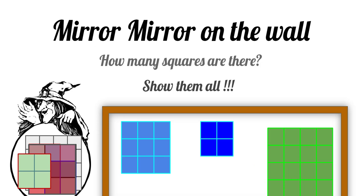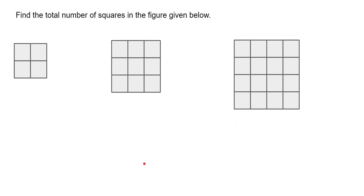This is a catchy topic for this particular section: mirror mirror on the wall, how many squares are there — show them all. What we are going to do in this section is find out how many squares are there in total, or how many squares can be found in the figures shown here.